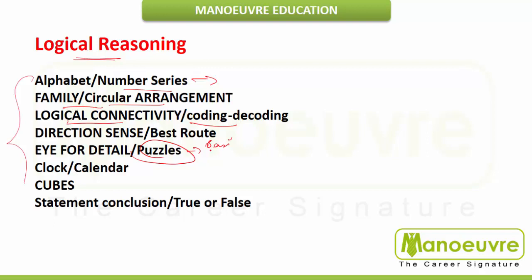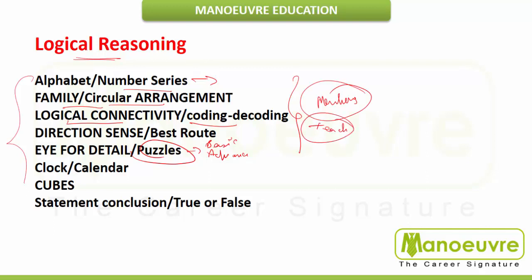The cherry on the cake is that our mentors appear for the exam every year — so they know exactly what question types come and how to solve them within the limited time frame, because they themselves appear for the paper every year. Their knowledge is very concrete, which helps in explaining things better and dealing with the time constraint effectively.